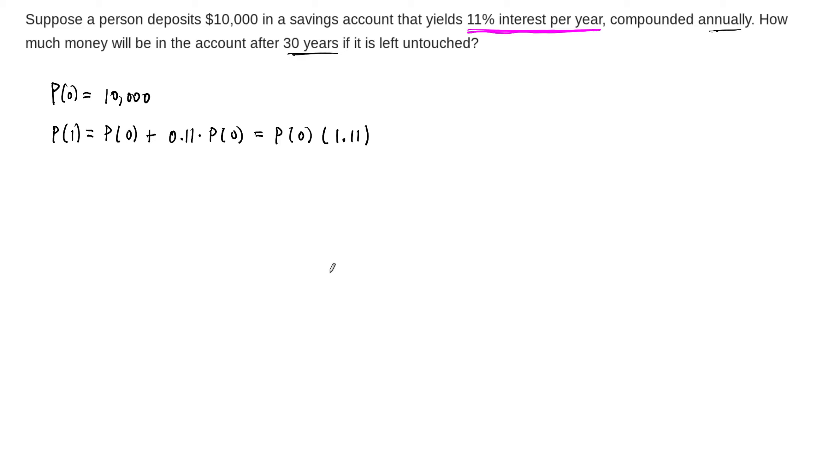Now what happens at the next stage? Well, after another year, in year 2, once our interest is paid, then what are we going to have? We're going to have the amount that we had from year 1, so P(1), plus the interest accrued to that amount. So that's another 11% of P(1). And again, we can factor this out, and this is going to be P(1), if I factor it the same way, times 1.11 again.